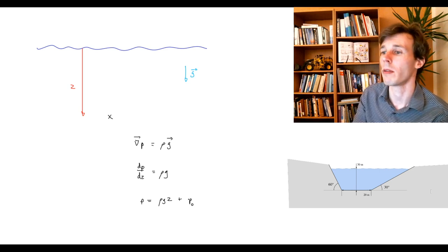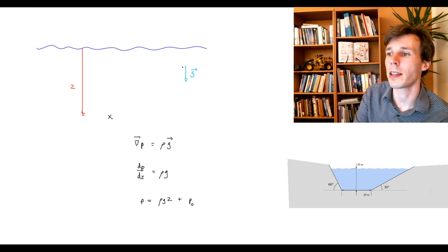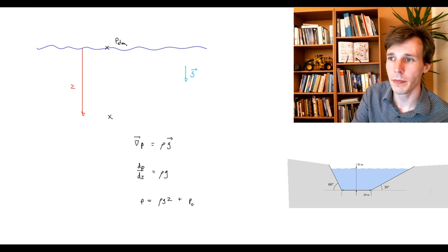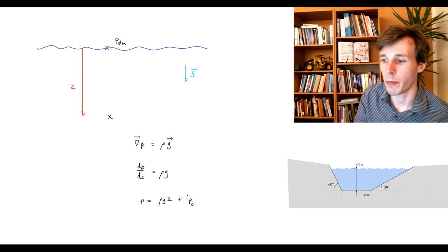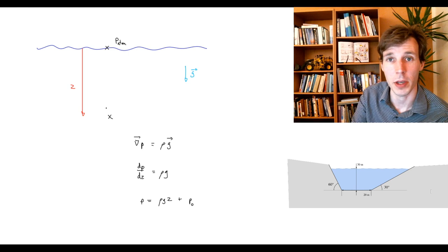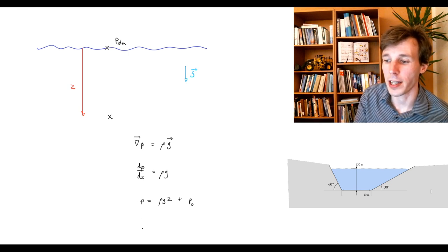So we call this P zero here. So if you have here at Z starting at the water surface, at the water surface you have P atmospheric. And at this point here you will have this P atm plus density times gravity times whatever the distance away from the top is. So if you apply at a point,